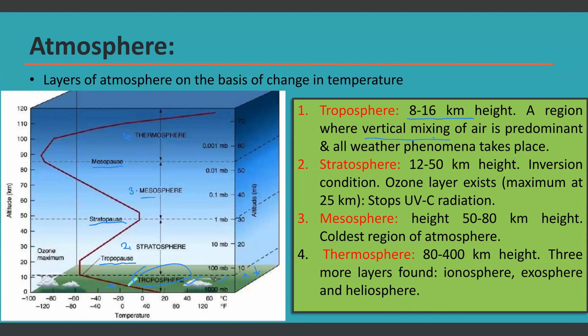The second layer is the stratosphere. Its height starts after the troposphere — meaning from 8 to 16 kilometers — and can extend as high as 50 kilometers. So the stratosphere spans roughly 12 to 50 kilometers in height. In the stratosphere, inversion condition takes place.